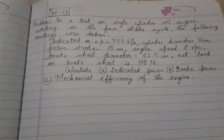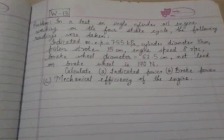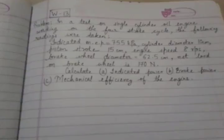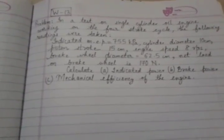Indicated MEP 755 kPa, cylinder diameter 10 cm, piston stroke 15 cm, engine speed 8 RPS, brake wheel diameter 62.5 and net load on brake wheel is 170 N. Calculate indicated power, brake power and mechanical efficiency of the engine.